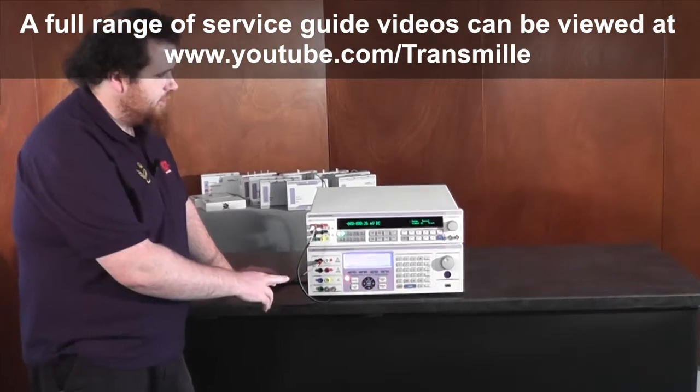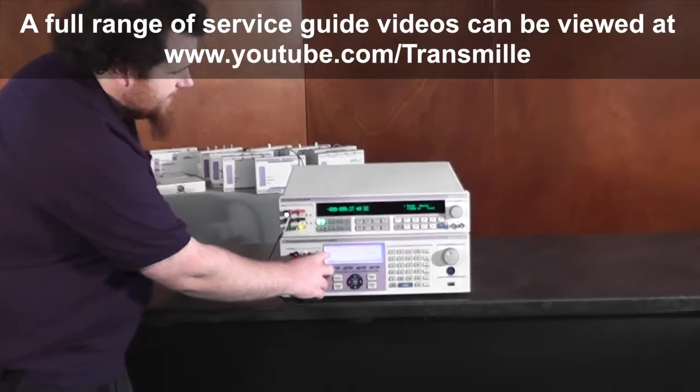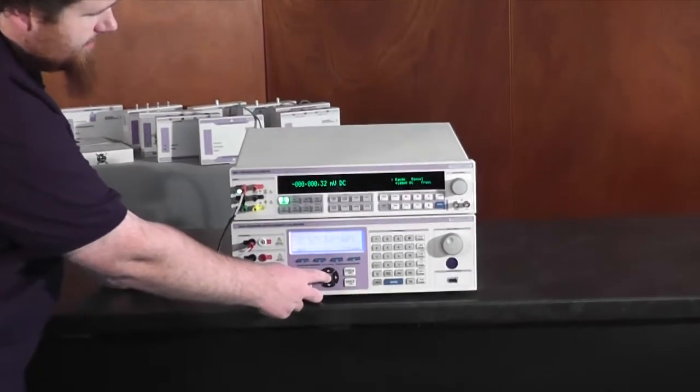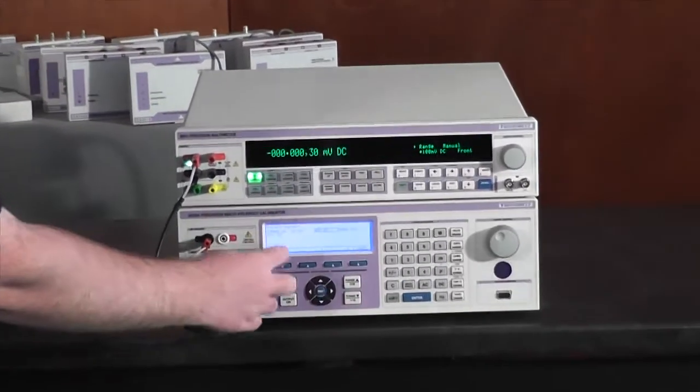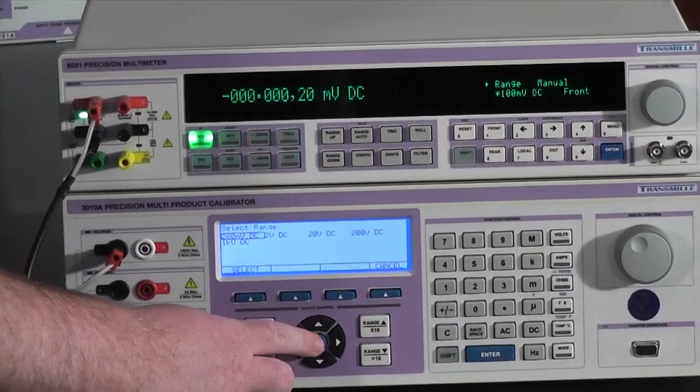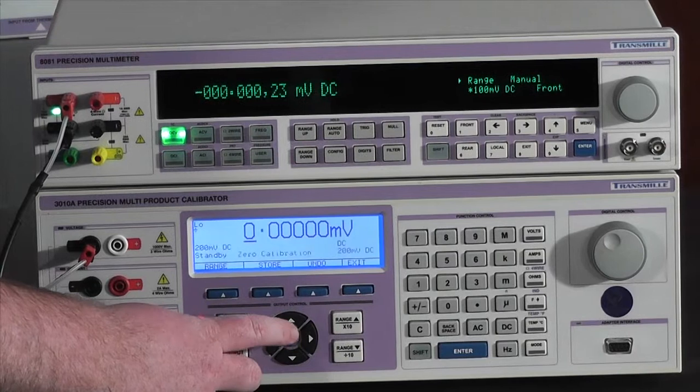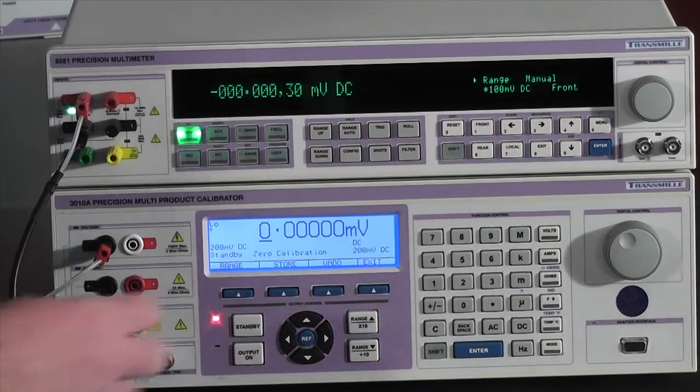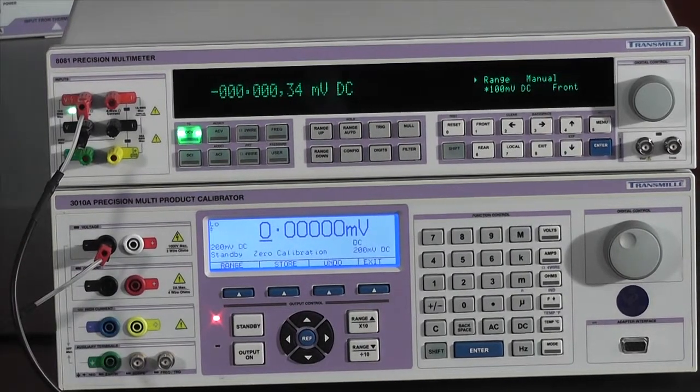Once entering the calibration menu, simply select DC volts from the screen, select the range that you want to adjust. In this case I'm going to select 200 millivolts, and the first calibration point will be the zero calibration.